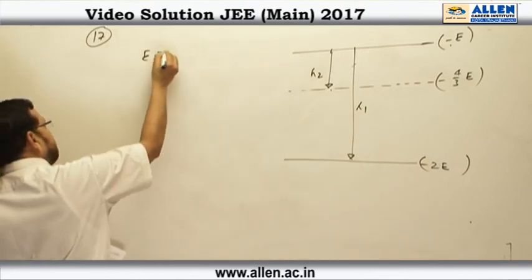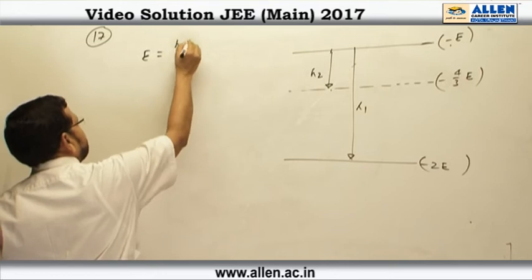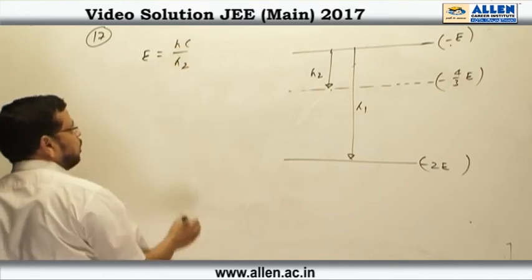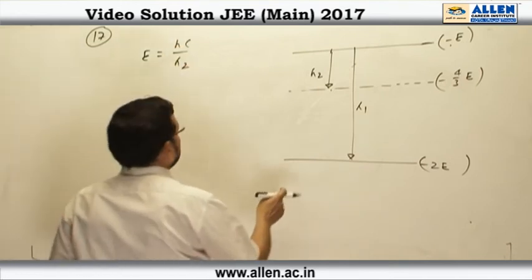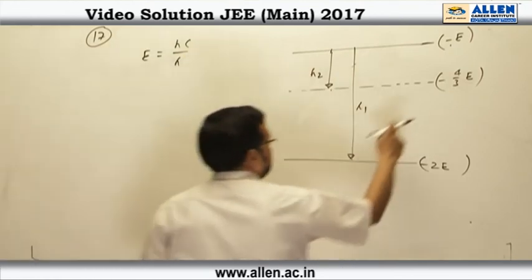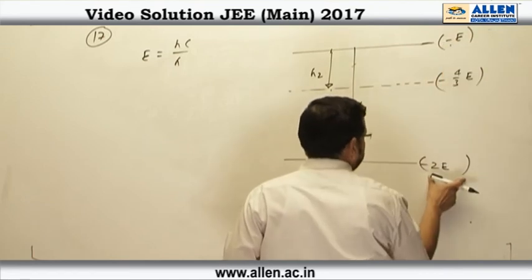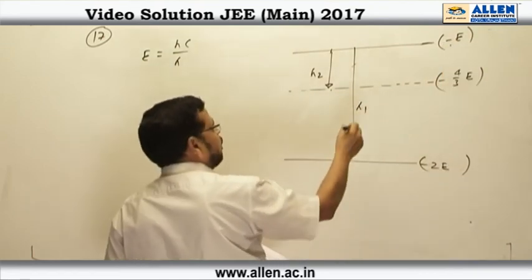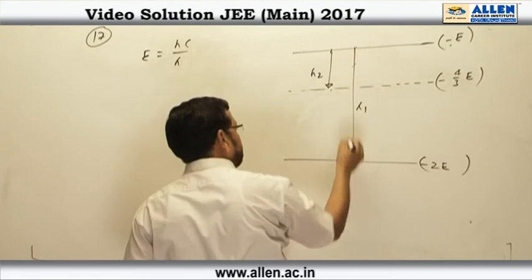So, I can write e is equal to h c over lambda 2 lambda 1 e is equal to here the energy level is minus e, here it is minus 2 e. So, when the transition will take place between these two levels,